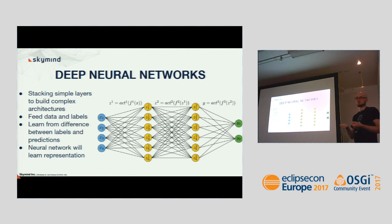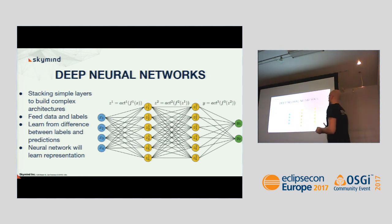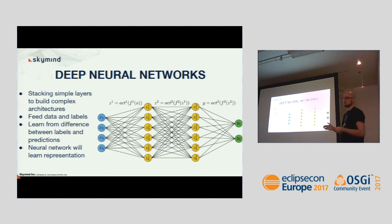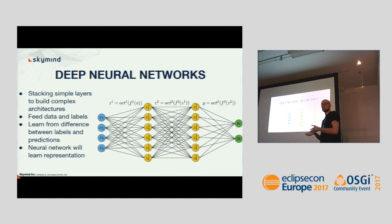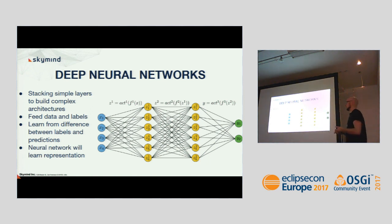Stacking those layers forms such a network and allows you to do what we call representation learning. Instead of computing features manually and doing feature engineering, oftentimes it works out of the box — you can plug in the features and labels and the problem will be solved by the network internally.